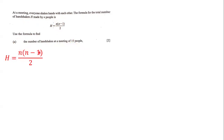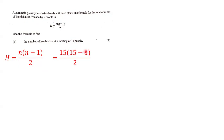We know that n is equal to 15 and our goal is to figure out what h is. Since n equals 15, we put 15 in both places. We subtract: 15 minus 1, and 15 minus 1 is 14.